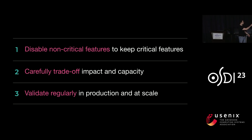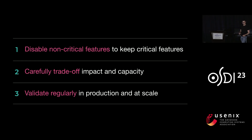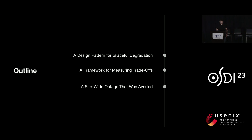With that key idea in mind, if there's something you take away from this talk, I hope it's these three points. First, in order to keep our critical features available even during overload scenarios, we needed to disable our non-critical features. Second, we can't just disable features randomly because this would lead to high user impact — we had to carefully trade off between impact and capacity. Finally, it wasn't enough to just be prepared with a plan; we actually had to validate our approach in production and at scale. I'll cover a design pattern for graceful degradation, a framework to measure trade-offs, and a site-wide outage we averted because of DEFCON.